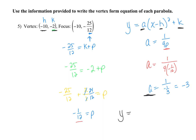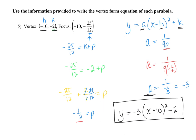Once you know a, h, and k, you just write the formula and fill them in. So y equals negative 3 times (x minus h) squared plus k. H is negative 10, so x minus negative 10 becomes x plus 10. K is negative 2. This is the equation for that parabola.